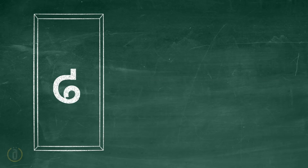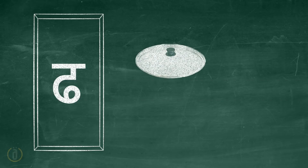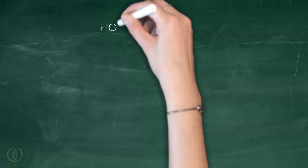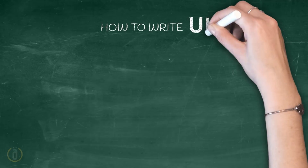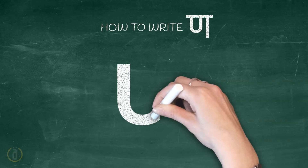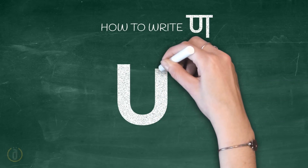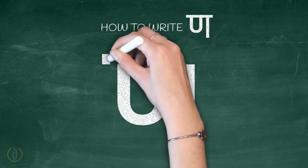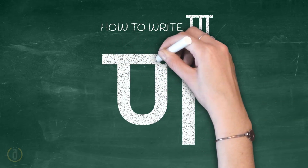Now let us learn some words starting with the letter Dha. How to write Na: draw the English alphabet U, then draw a standing line next to it, and finally draw a sleeping line on the top.